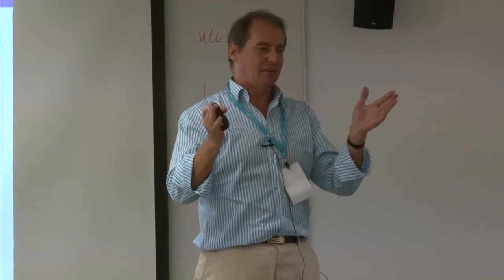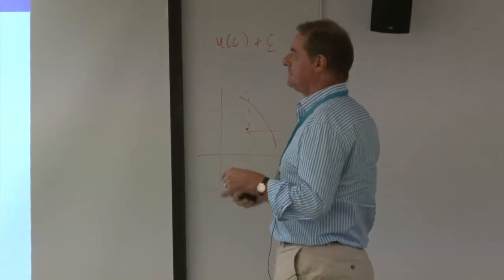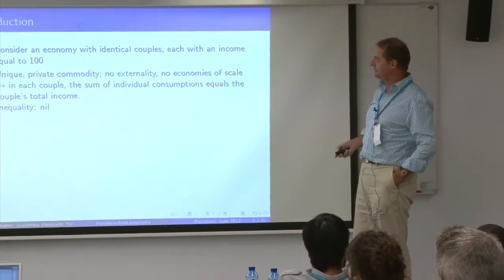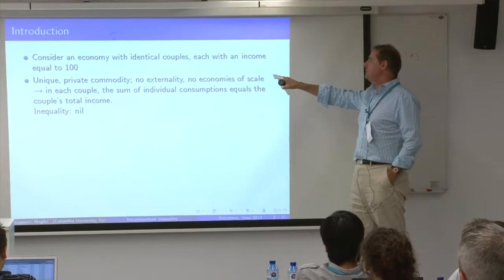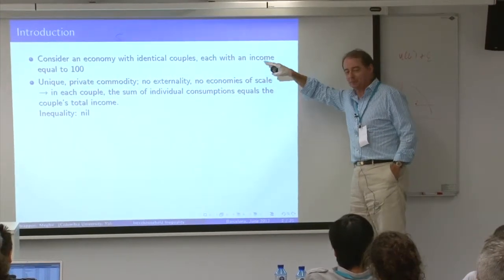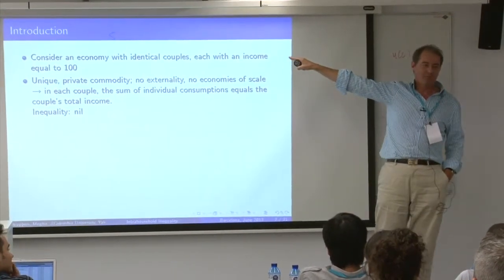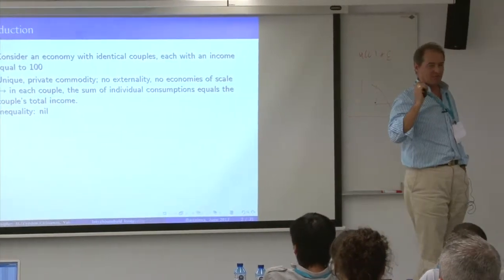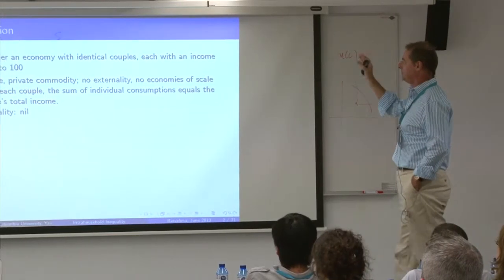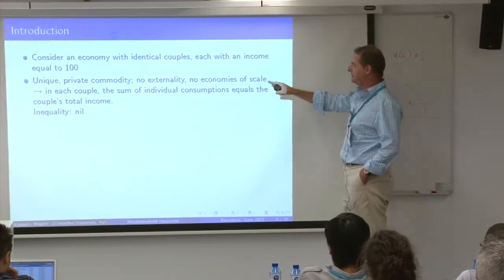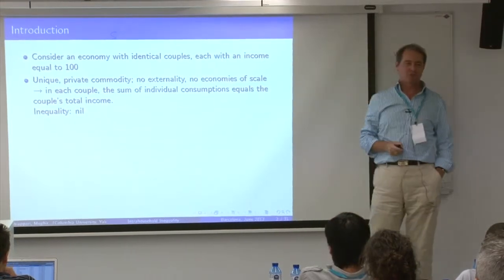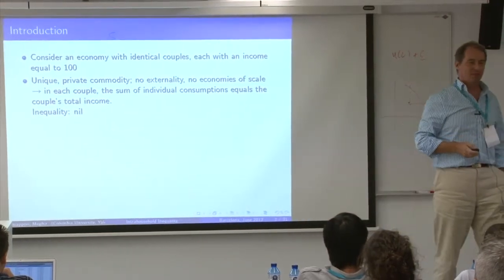This is something you find a lot in the inequality literature. Let me take an extreme case: an economy in which all couples are identical, each with income equal to 100. I'll make an assumption I don't like — just for the sake of presentation — that there is only one commodity, privately consumed, with no externalities, no economies of scale. So in each couple the sum of individual consumption equals the couple's total income.